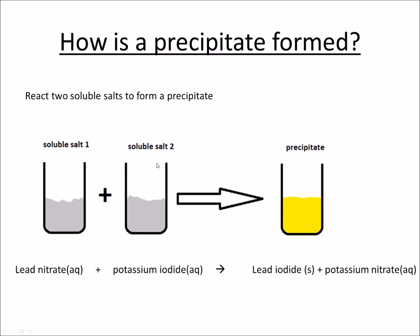Another example that's probably more common to you is by reacting two soluble salts. In this case I've got lead nitrate reacting with potassium iodide, giving us the products lead iodide and potassium nitrate. We can see the lead iodide is solid, so that's our precipitate.